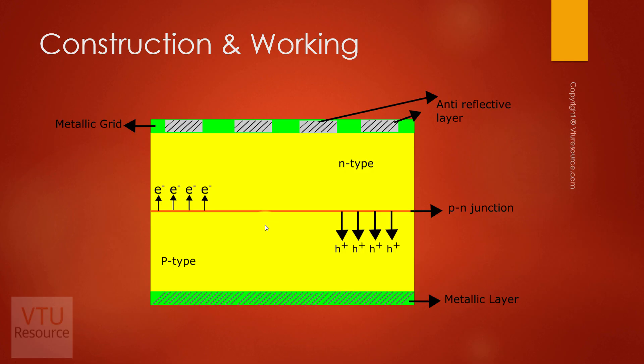We can observe the movement of current or we can obtain this PV current until the sun is shining on the PV cell. Once the sun stops shining on the cells, we can no more obtain photovoltaic current.